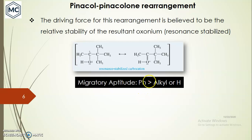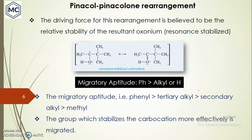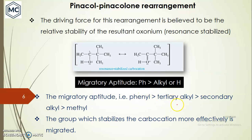The migratory aptitude follows this order: phenyl has more migratory aptitude than alkyl or hydrogen. Phenyl has more migratory aptitude than tertiary alkyl, which has more than secondary, which has more than methyl or primary. This migratory aptitude is based on which group stabilizes the carbocation most effectively — the group that stabilizes the carbocation more effectively migrates preferentially. Phenyl can stabilize the carbocation very effectively through resonance conjugation, and tertiary alkyl is electron-donating, which also stabilizes the carbocation.